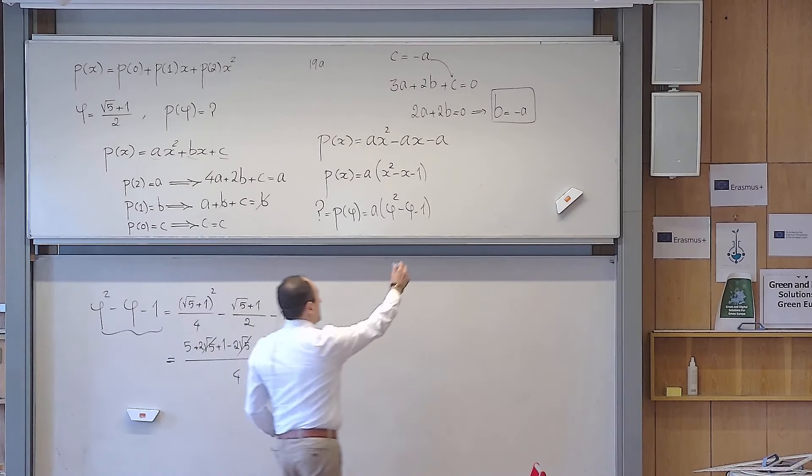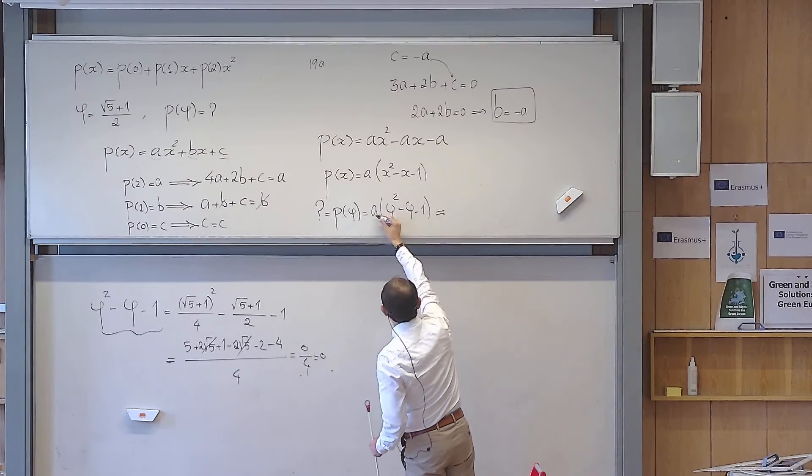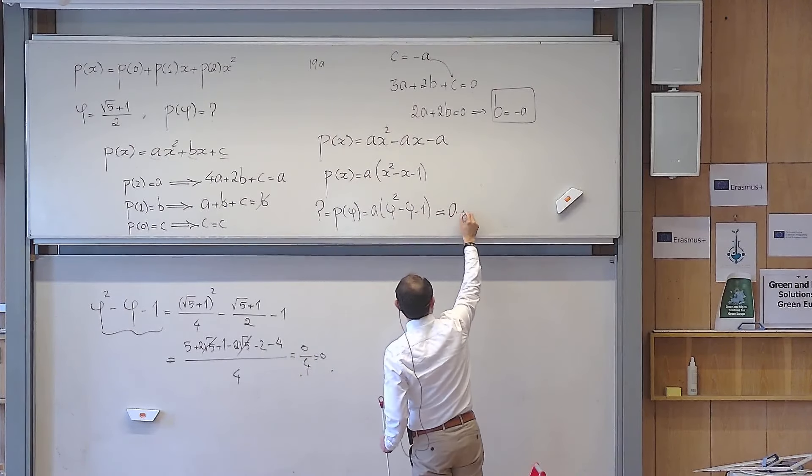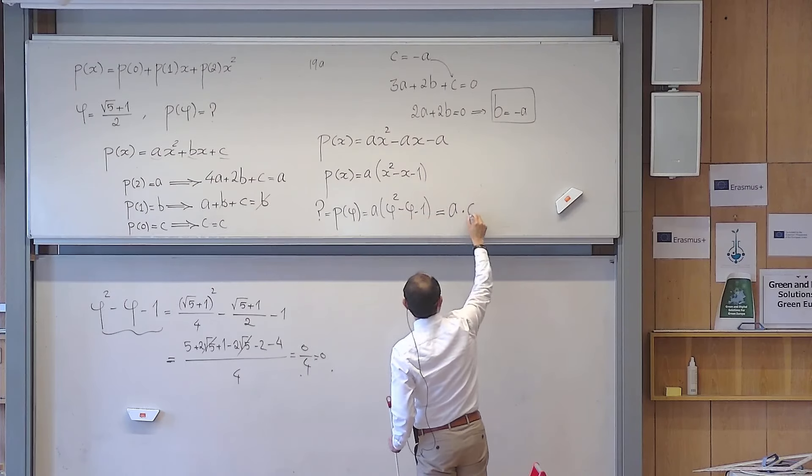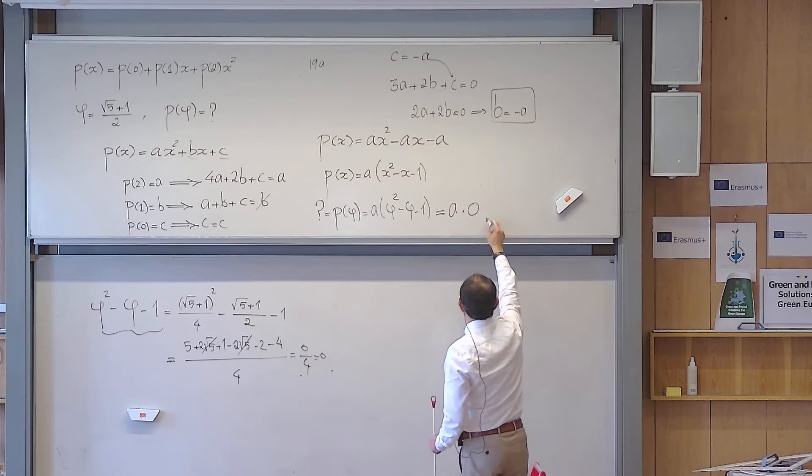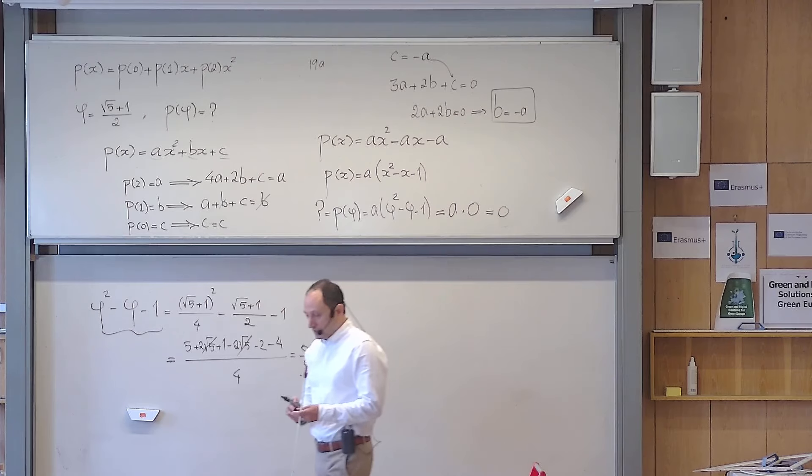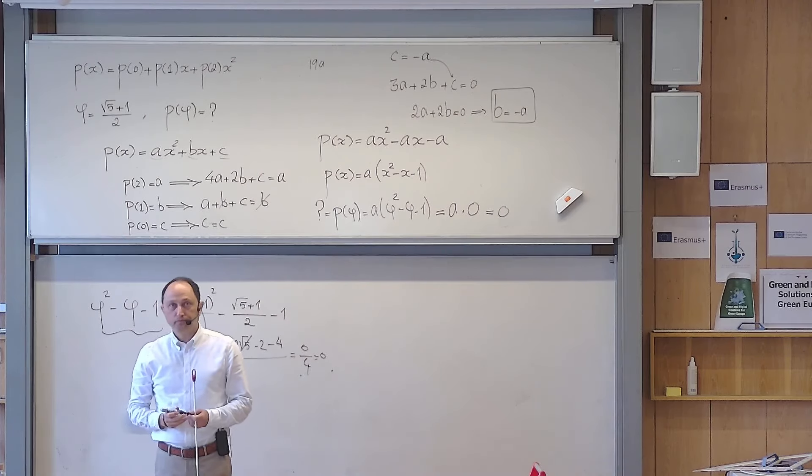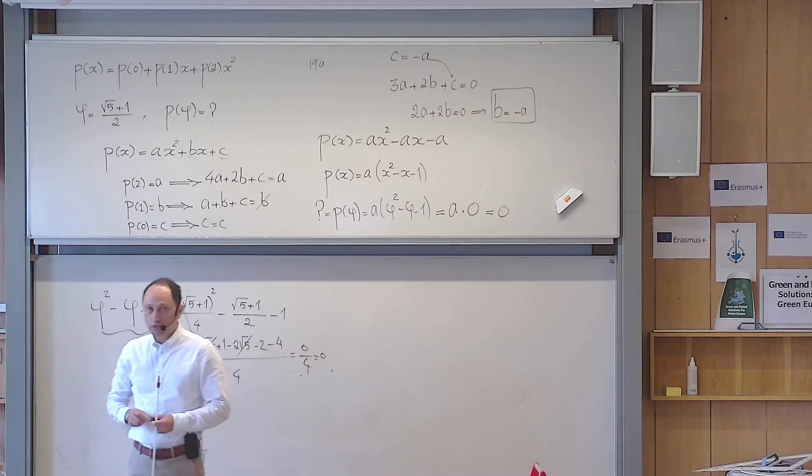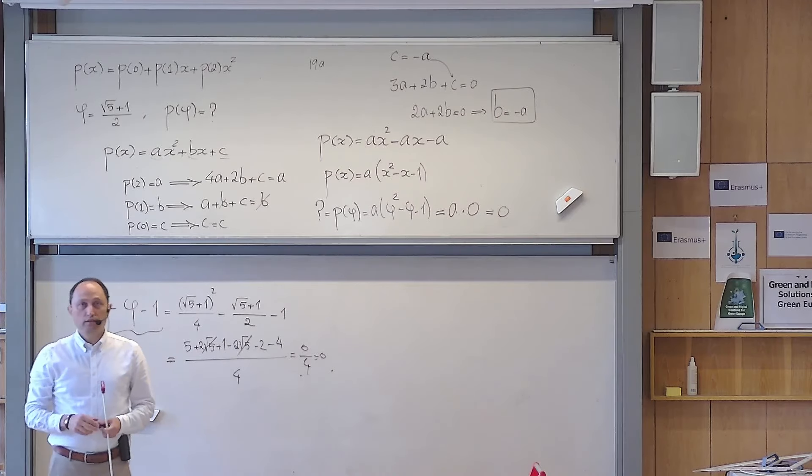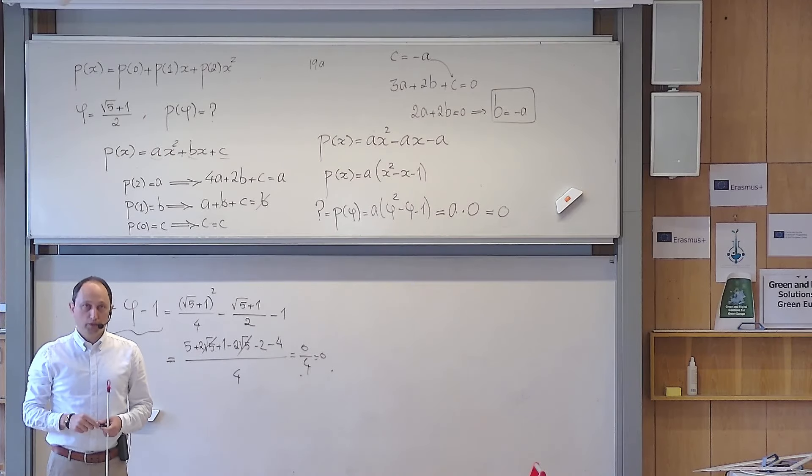So this means that I can come back to the problem. a is still not known, but we don't need it because coincidentally, this combination for the golden ratio is 0. So the answer, as predicted by the problem, is 0. So I hope that this video was useful for you. Until the next video, be safe and goodbye. Thank you.